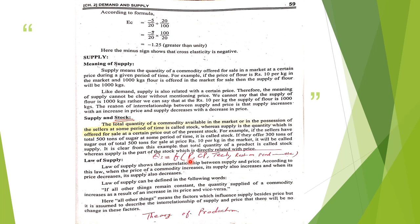If the price of a commodity increases, supply will tend to increase. Simply, this is because the profit of the producer will increase. For example, if a seller is selling his product at 10 rupees and the price becomes 15 rupees, the profit of the producer will tend to increase. When profit increases, he will supply more and more of the commodity.